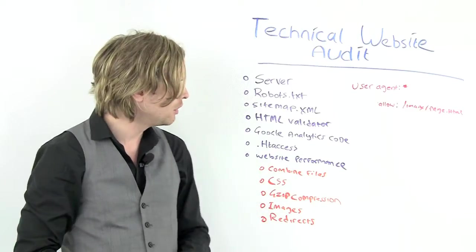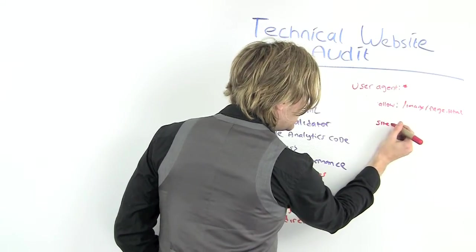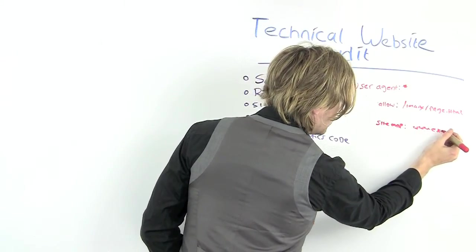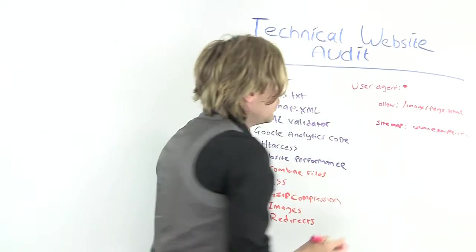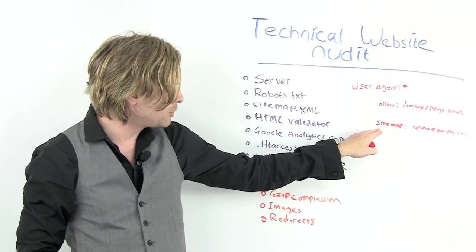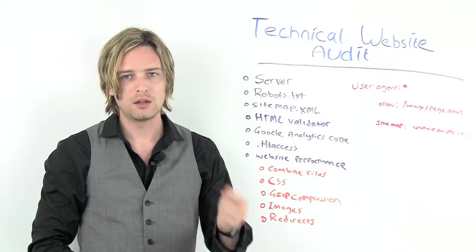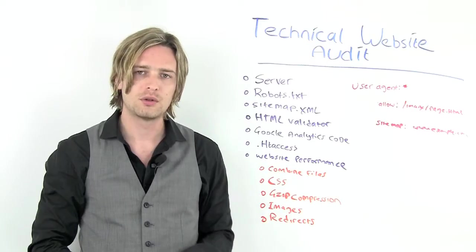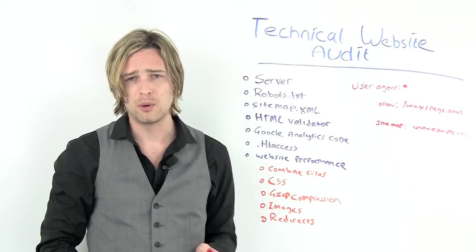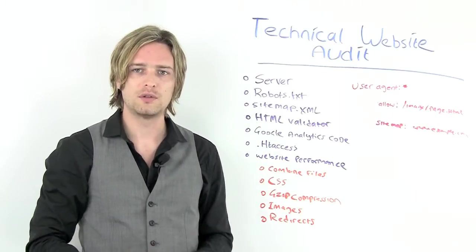The other very important feature of the robots.txt file is to include a link to your sitemap. Because the robot's file is the first port of call, it will look here for a link to your sitemap. The sitemap should just be written sitemap colon and then a space with the URL of the sitemap following afterwards. That will tell Google or any search engine that's crawling your site where your sitemaps are located. This is really important because when you're getting your site indexed, the sitemap.xml file is vital for this.